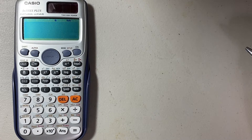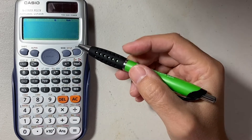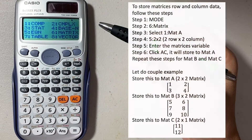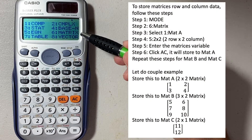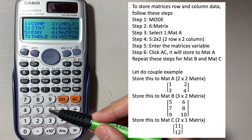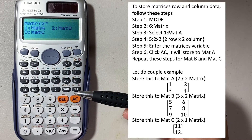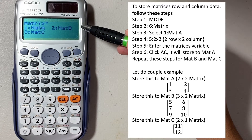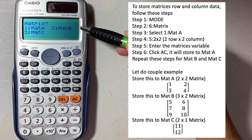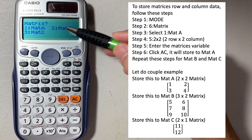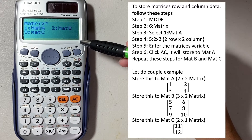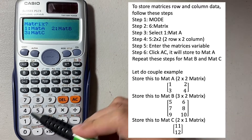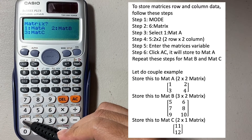To store a matrix row and column data, follow this step. First, go to the mode, and here you see number 6, which is matrix — select that. We are given the option to store three matrices in the calculator, which is A, B, and C. In this case, we're going to select A, which is number 1.